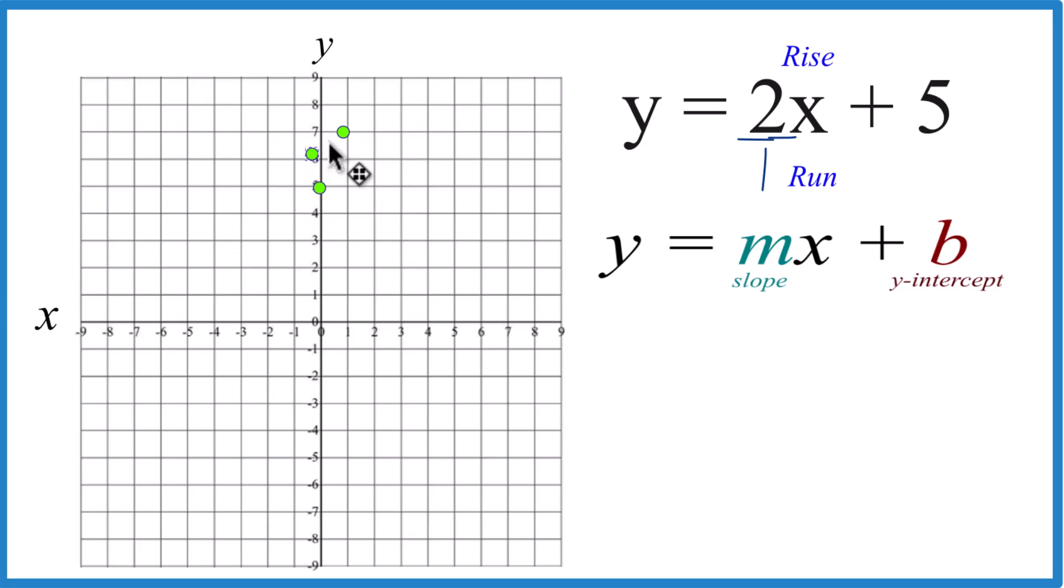Let's do one more. Rise 1, 2, and run 1. And if we run out of space, we could go in the opposite direction, down 1, 2, over 1 to the left. Down 1, 2, over 1 to the left.